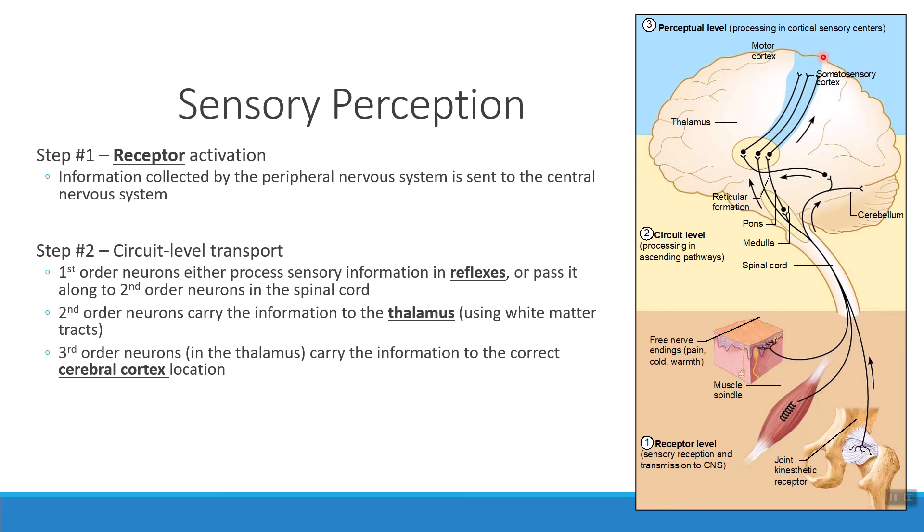So first order neurons bring the information to the spinal cord. If I'm just doing a reflex, they're good enough. Second order neurons take the information up to the thalamus where it can be sorted. Third order neurons take it to the part of the brain where I can actually go through and process it. And that processing is what leads to perception. By sending that information to the correct part of the cortex, I'm able to accurately interpret and understand what it is that I'm feeling.